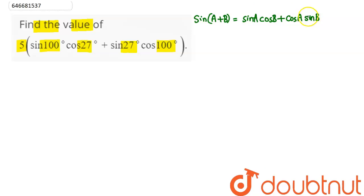Now here, if we consider this as A, this as B, so we have sine A cos B plus cos A sine B. Hence we can write this here as 5 into sine of A plus B...